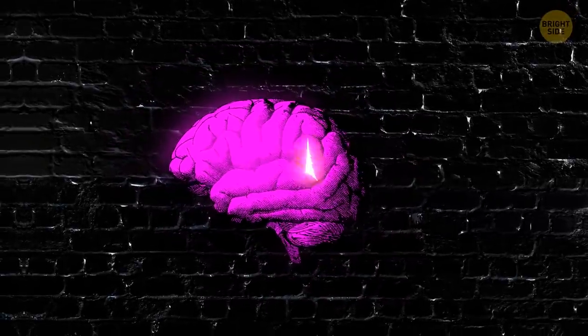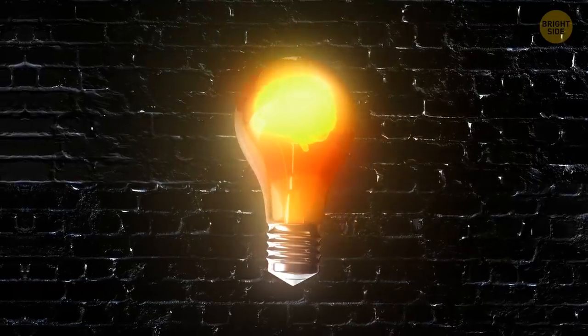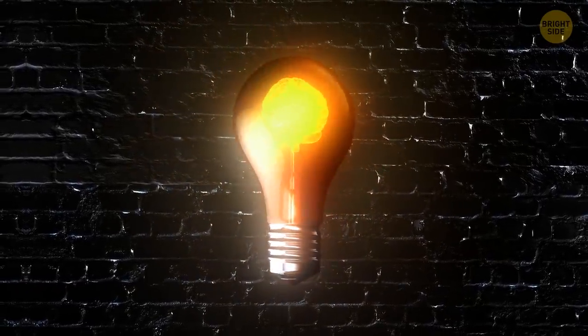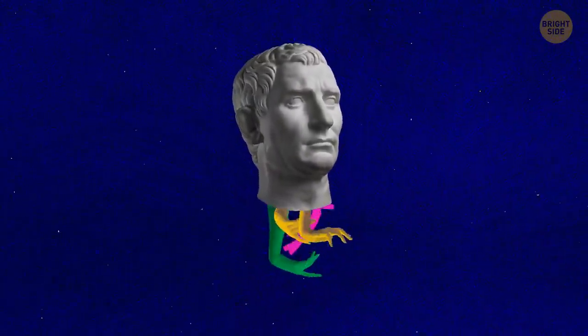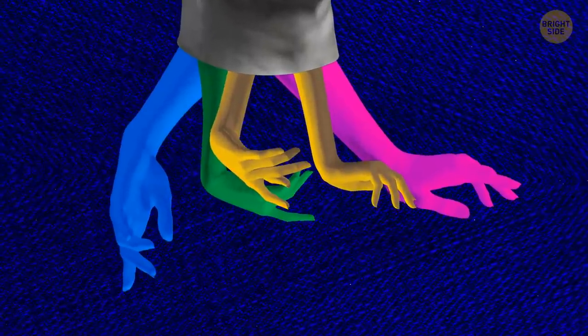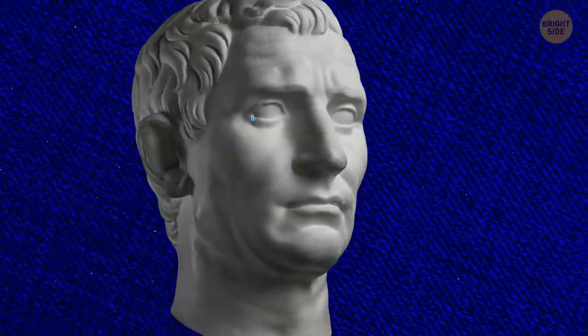Your brain generates around 23 watts of electrical power, which is enough to run a small light bulb. Humans can't really multitask. Your brain can't perform more than one action at the same time. It switches between them, which doesn't save time, as you might think, but increases the possibility you'll do something wrong and makes the process longer.